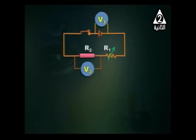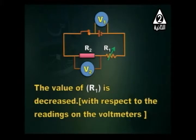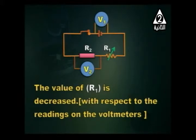What happens when the value of R1 is decreased, with respect to the readings on the voltmeters? We have two voltmeters: voltmeter one is located across the two terminals of the battery and measures terminal voltage; voltmeter V2 measures the voltage across R2. The value of R1 is decreased.